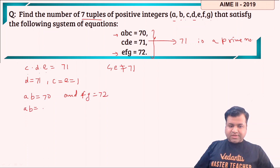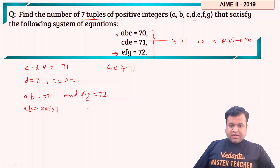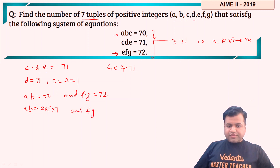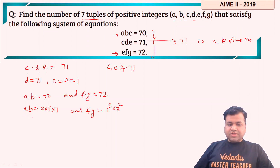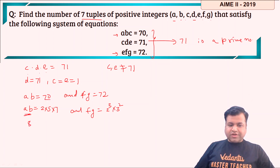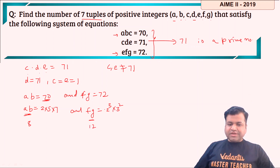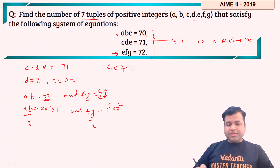So we're left with only two equations: A·B = 70 and F·G = 72. The prime factorization of 70 is 2 × 5 × 7, giving (1+1)(1+1)(1+1) = 8 divisors, so there are 8 ordered pairs (A, B) with A·B = 70. The prime factorization of 72 is 2³ × 3², giving (3+1)(2+1) = 12 divisors, so there are 12 ordered pairs (F, G) with F·G = 72.